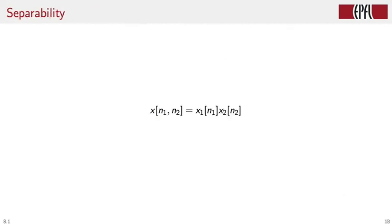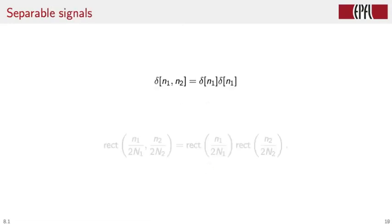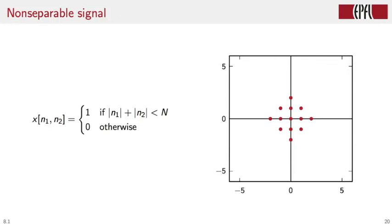One fundamental property for two-dimensional signals that has no equivalent in one dimension is that of separability. Separability simply means that we can write a two-dimensional signal as the product of two independent 1D signals defined on indices N1 and N2. So the delta signal, for instance, is fully separable because it is just the product of two delta functions applied to both indices. And similarly, the rectangular function is again the product of two one-dimensional rect functions defined over N1 and N2.